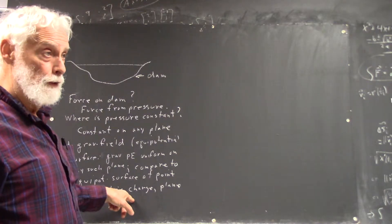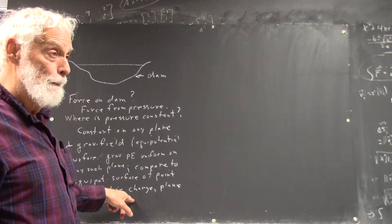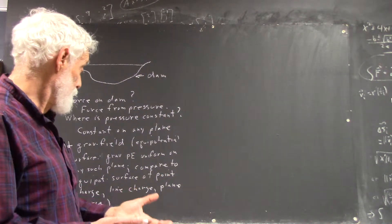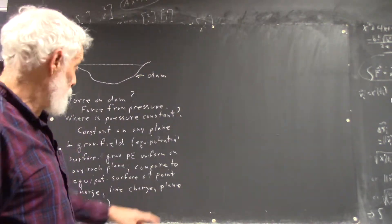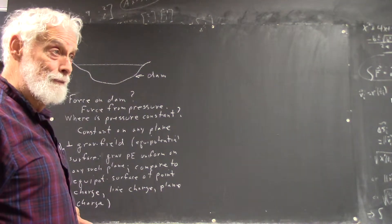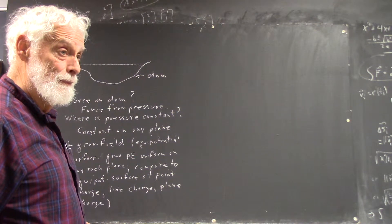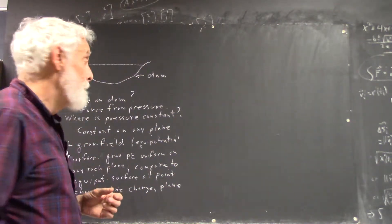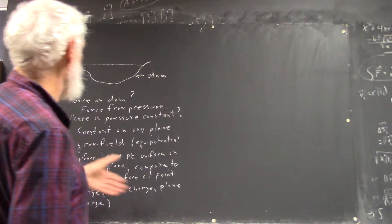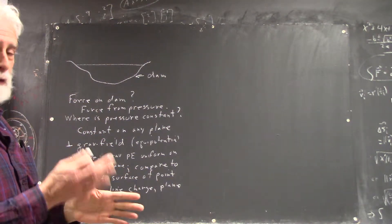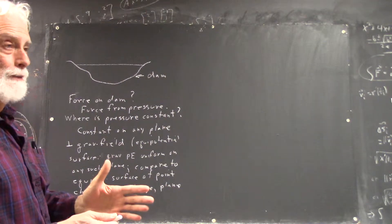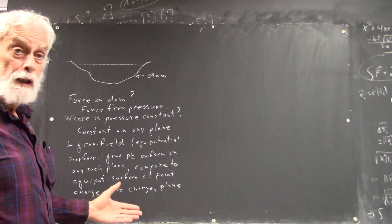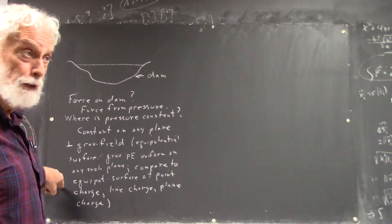Line charge, what's the equal potential surface for a line charge? Cylinder. Yeah, cylinder, coaxial with the line. For plane charge? A parallel plane. Assuming an infinite plane charge or that you're much closer to the plane distribution than to the edges. So just putting this into a broader context because you have to do integrals for these things too.